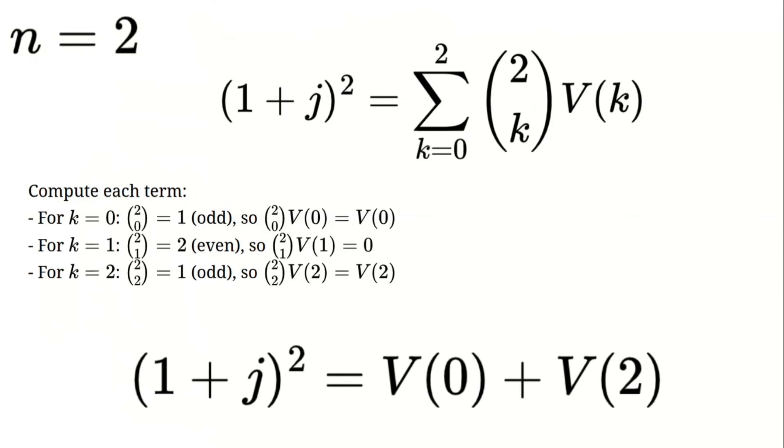That gives us 1 plus j squared equals V of 0 plus V of 2. This matches what we predicted using Lucas' theorem confirming that our approach works.